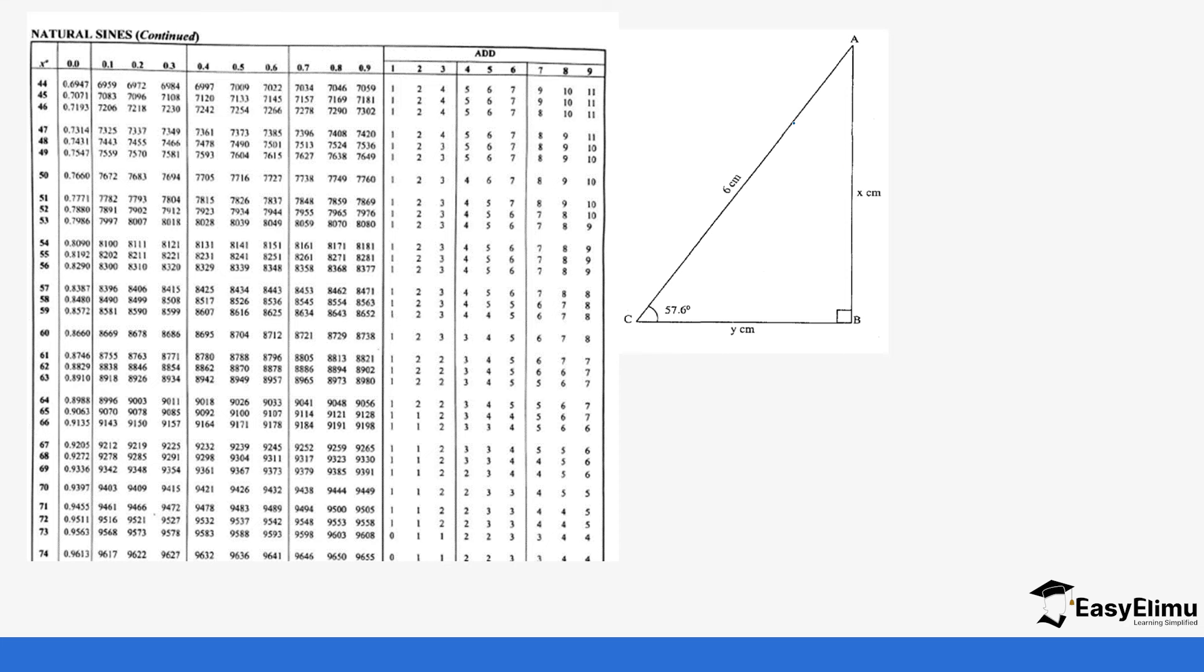Sometimes you can be required to integrate the use of tables within a diagram. For us to get the sine of 57.6 degrees, sine is opposite over hypotenuse, so it's going to be x over 6 centimeters. We multiply by 6 both sides, so we get 6 sin 57.6 equals x.